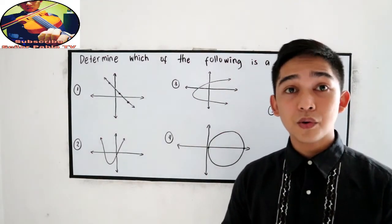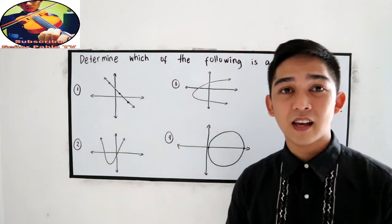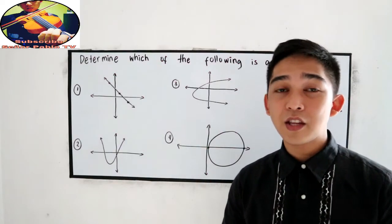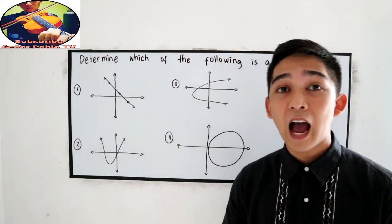This time we're going to use the vertical line test. A vertical line test is a test where we can use to determine whether the given graph is a function or not. How to do that?